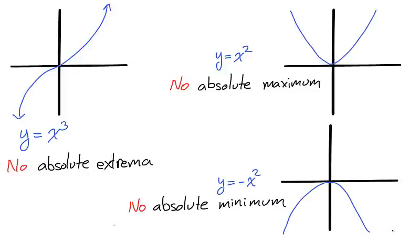A function doesn't necessarily have an absolute maximum or minimum. Take for instance, y equals x cubed. A function may have an absolute minimum but no absolute maximum. Take for instance, y equals x squared.